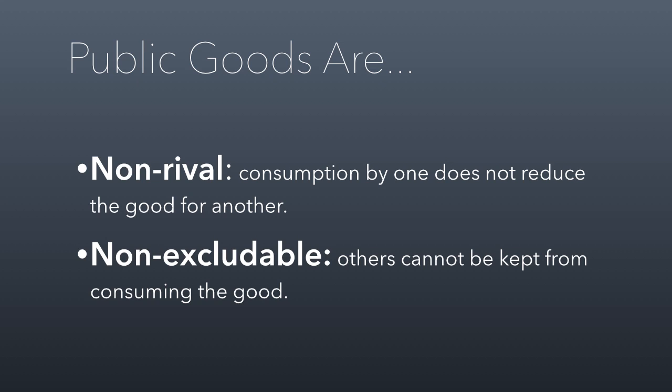Non-excludability means you can't keep people out by artificial means. A non-excludable good example: every year we have Stadium of Fire in Provo, a big fireworks show at the football stadium. Part of that show is excludable because they only have so many seats — you buy tickets. But from outside, they can't stop you from seeing the fireworks display, so you can see all the big fireworks going up in the air.